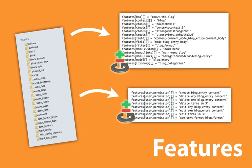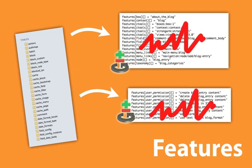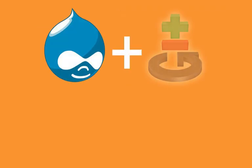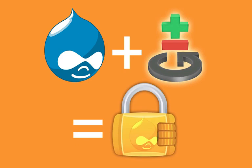By using Features to version control configuration changes, you also increase the stability of your website, making it more difficult for users to make destructive changes without having a backup or being able to identify where the bad change was made. By the end of the section on Features, you'll be able to put virtually any critical component of your website into code so you have a backup and a way to roll back changes.